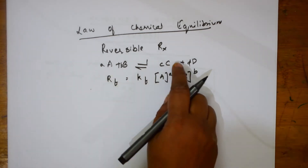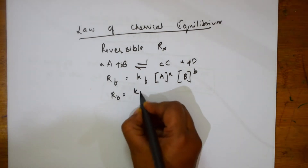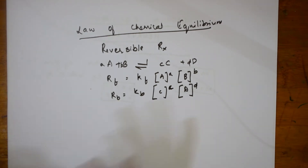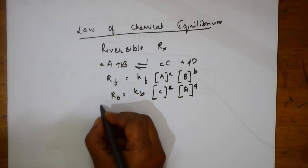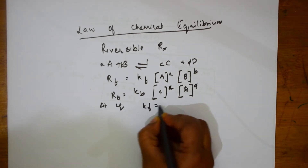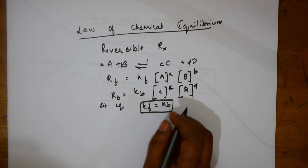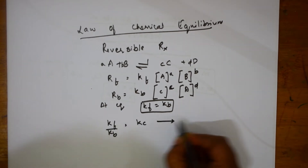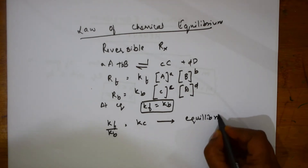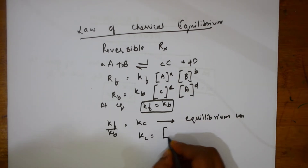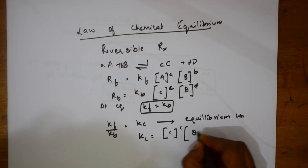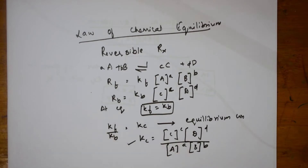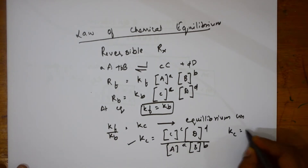The rate of the backward reaction is RB = KB × [C]^c × [D]^d. At equilibrium, the rate of forward reaction equals the rate of backward reaction, so KF equals KB. The ratio KF/KB is called KC, the equilibrium constant: KC = [C]^c × [D]^d / ([A]^a × [B]^b).